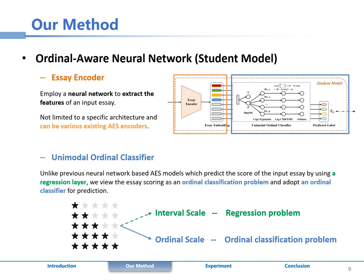As shown in the figure, the student model is an ordinal aware neural network model and consists of two main components: essay encoder and ordinal classifier.